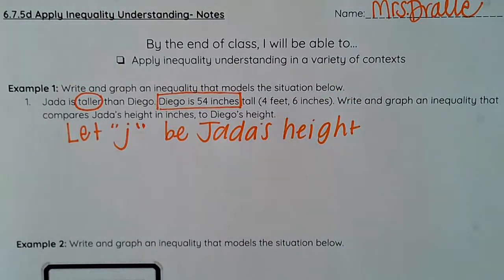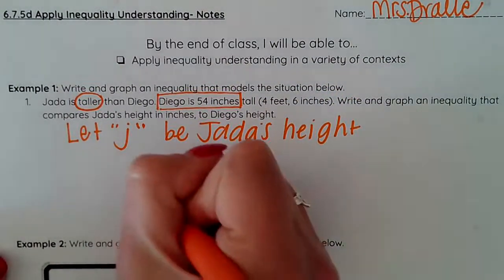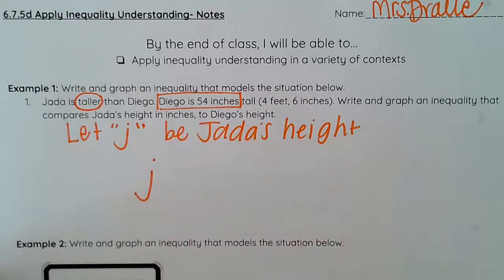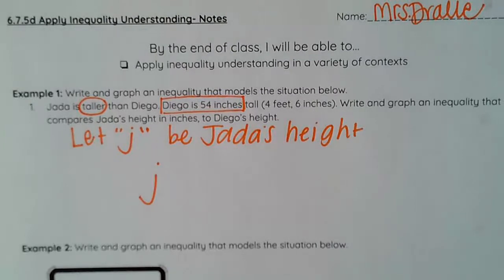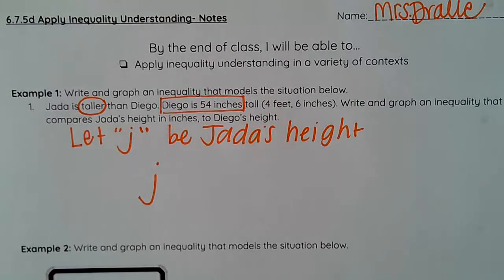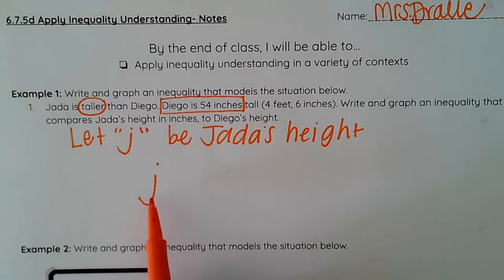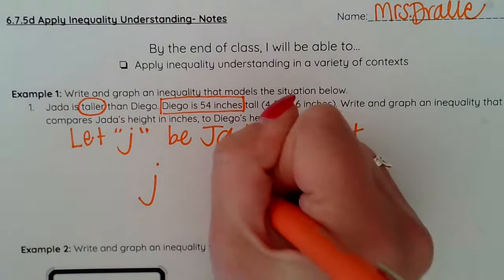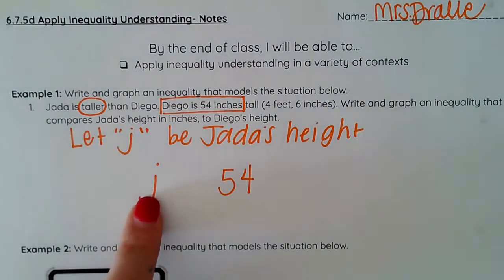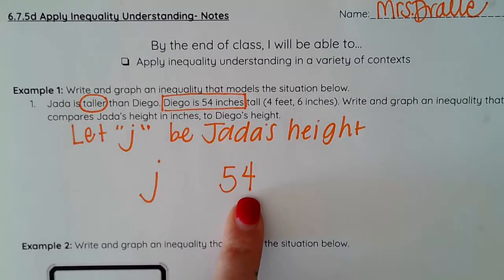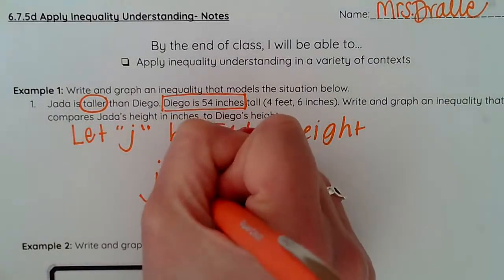Now I know that I want to keep my variable on the left side. So once I write my let statement I am going to write my inequality before I graph. But the end goal is to have that graph. J and then I know the start of my solution set is 54. Diego's height is 54 and all we know is that J has to be greater than that.